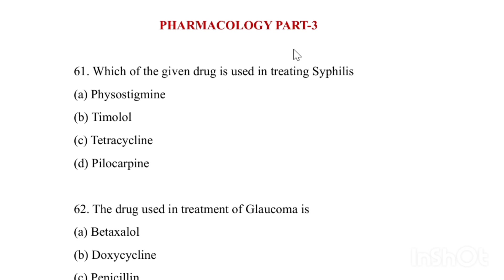Which of the given drugs is used in treating syphilis? Option A: Physostigmine. Option B: Timolol. Option C: Tetracycline. Option D: Pilocarpine. Answer is Option C, Tetracycline.